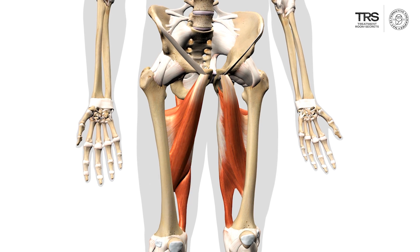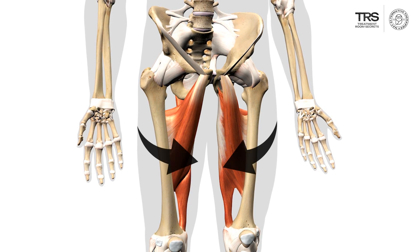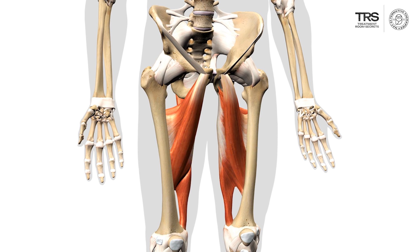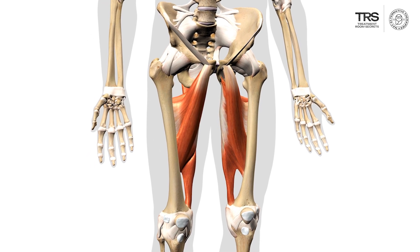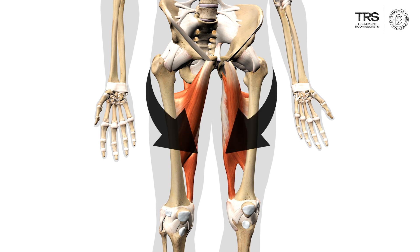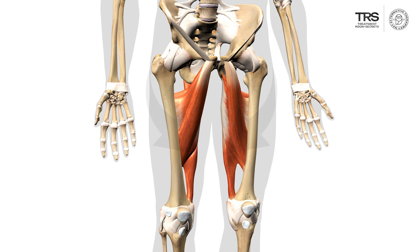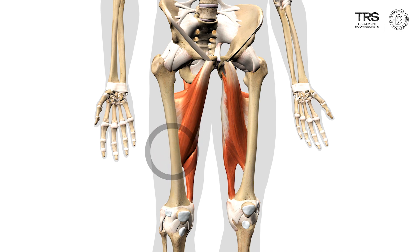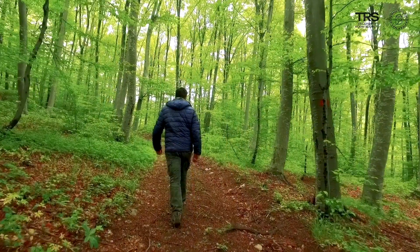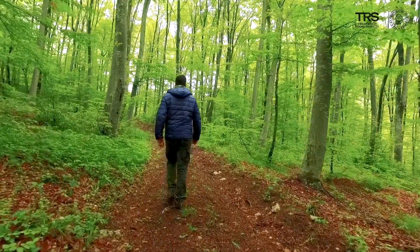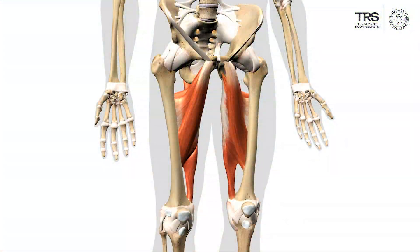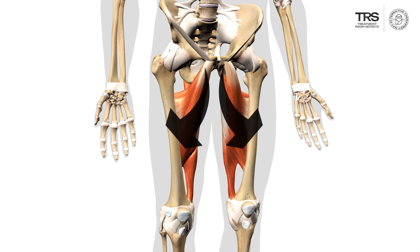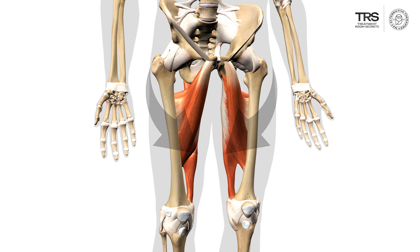Their basic function is that they pull the leg inwards. If the muscle contracts and your leg is straight and free, your leg will be pulled inwards. However, if you're standing on your leg, the muscle acts as a stabilizer, helping you stand, walk, and balance. Any movement that tends to pull you the other way — if the adductor contracts, it will pull you inwards and improve your balance.